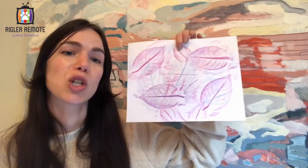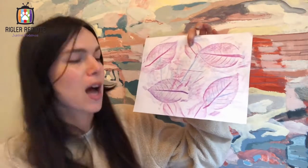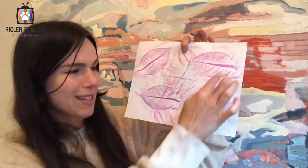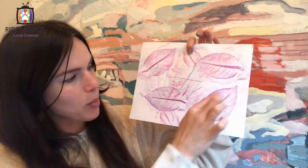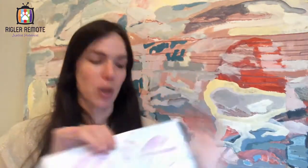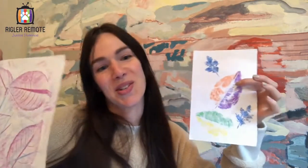The second project is a leaf rubbing project and I will show you how to use leaves underneath your paper and a crayon to expose all the details of the leaf. So the shape, the stems, and the veins in the leaf. So I have these two projects to show you today. I hope that you guys can do these at home and I'd love to see what you create.